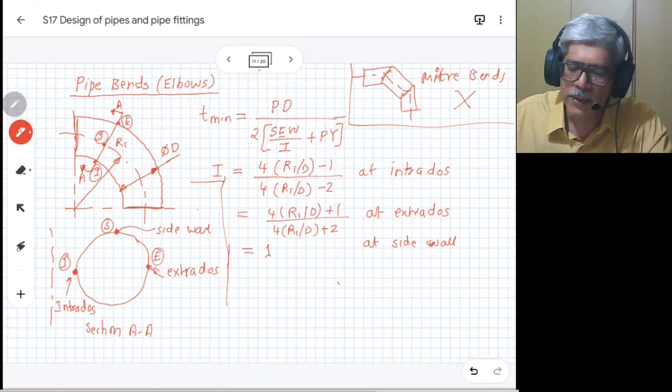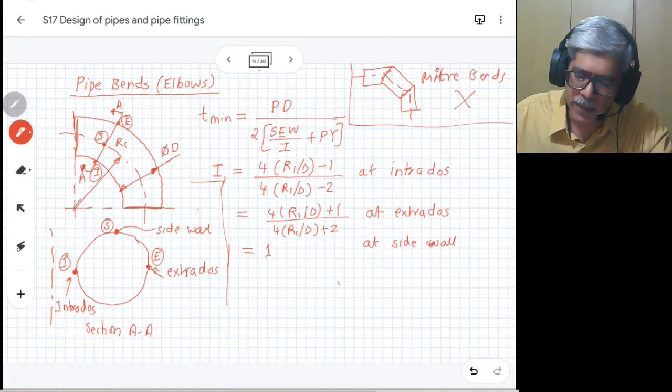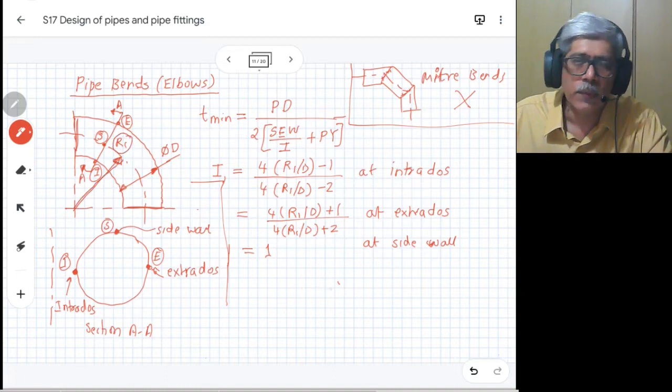Also, for doing this calculation, you need to know what is the radius of bend, which is given as R1. We have seen in the previous slide that elbows come in two standard radius: one is a short radius elbow and the other is long radius elbow.